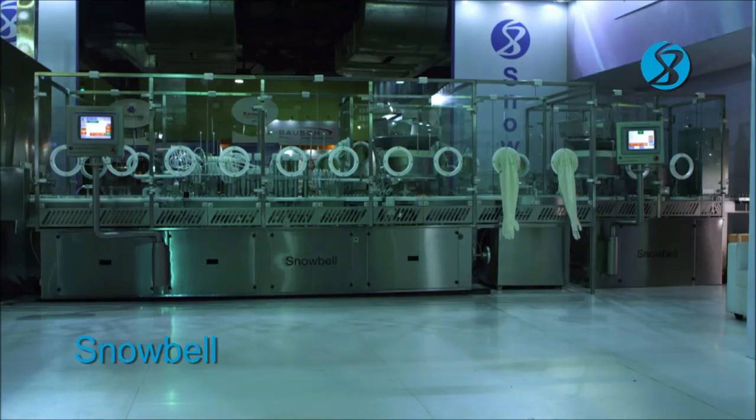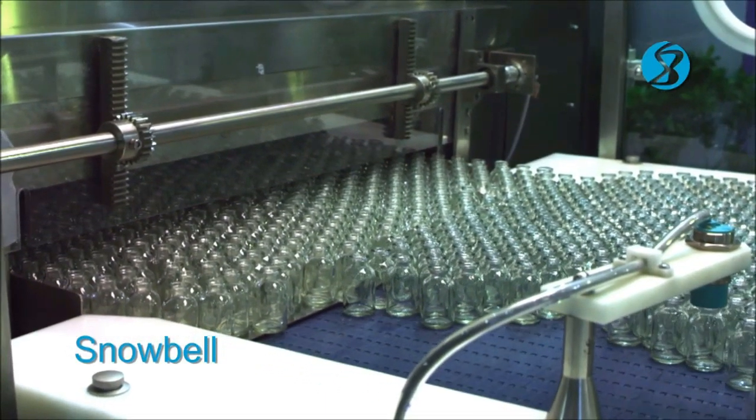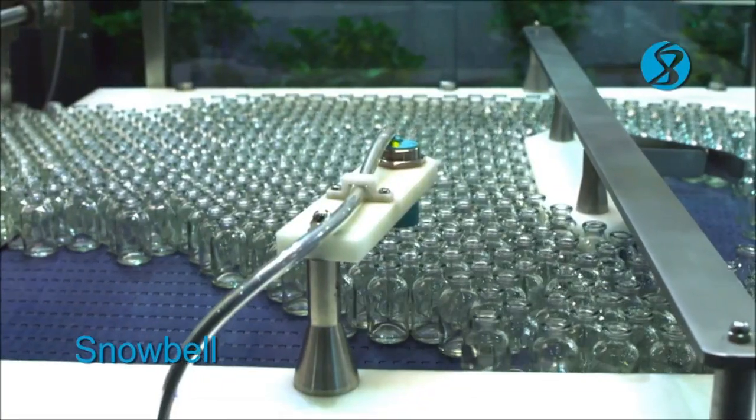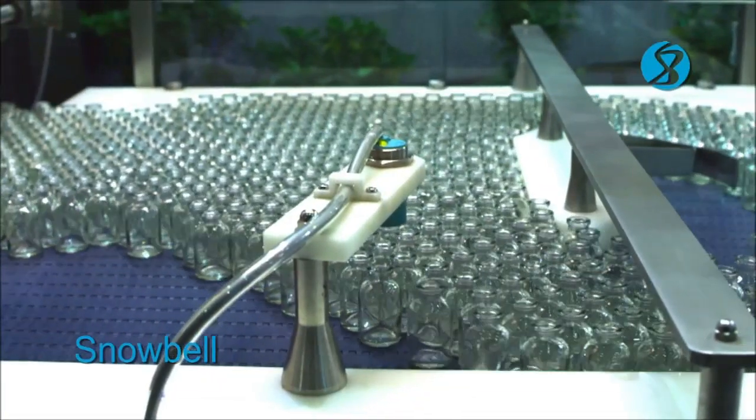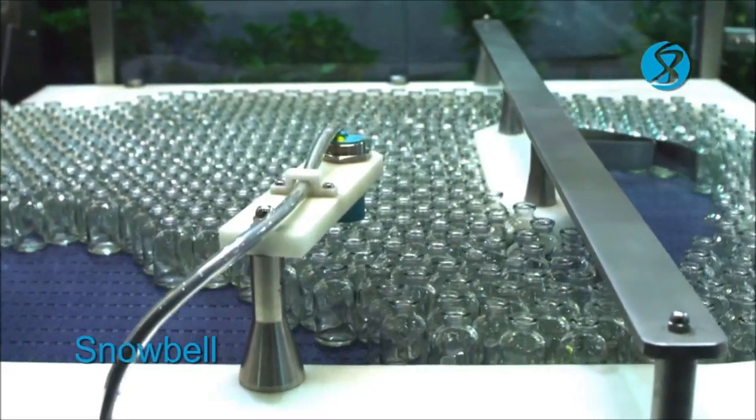Snowball liquid vial filling and stoppering machine is a monoblock type process machine designed to fill liquids and to further carry out the stoppering operation on the filled vials. The vials fed from a linear unscrambler through one lane are carried back to back by a slat belt through the filling section of the machine.